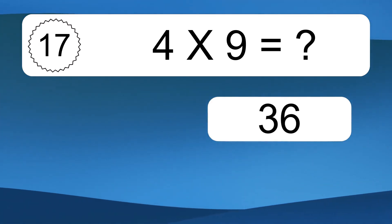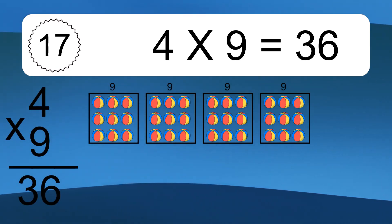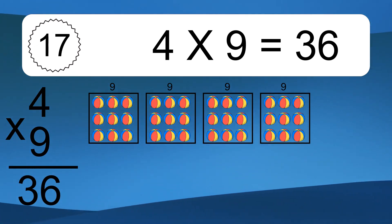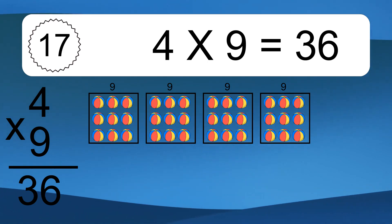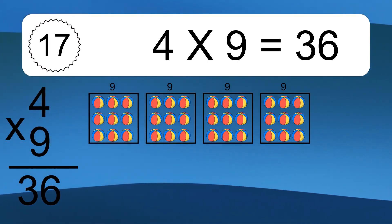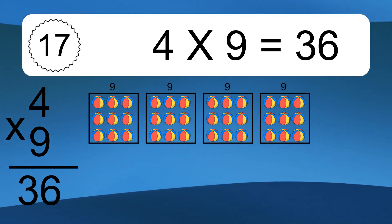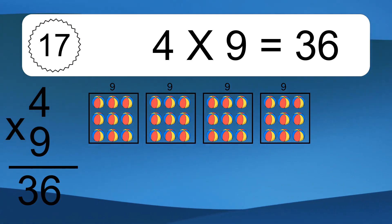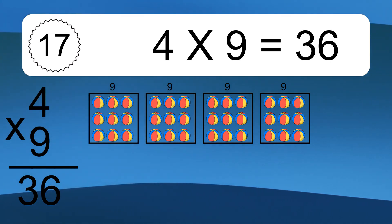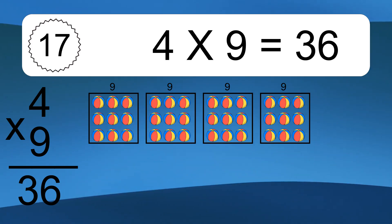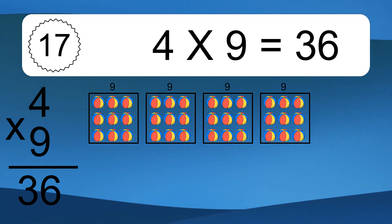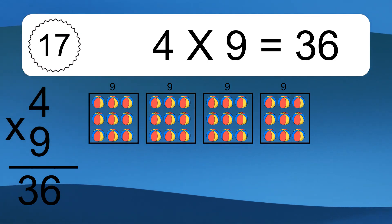4 times 9 equals what? We have 4 boxes and each box has 9 colorful balls inside. If you count all the balls in all the boxes together, you will have 4 times 9 balls. This equals 36 balls.